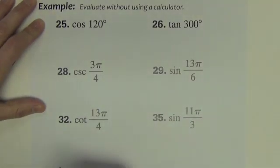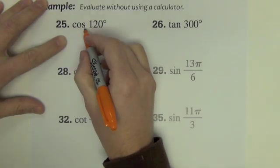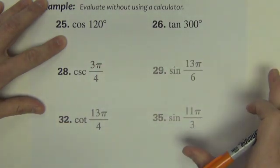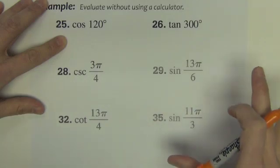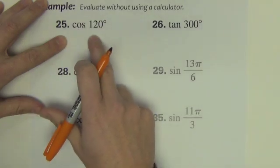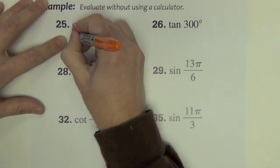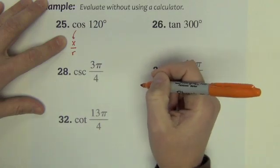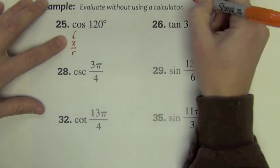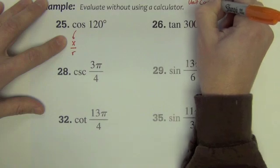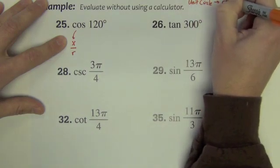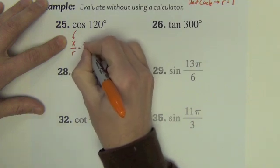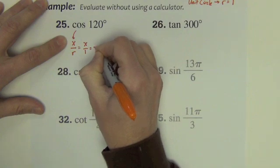Directions say evaluate without using a calculator. Cosine of 120. Have the unit circle out. What we just did a couple slides ago. Have those notes sitting in front of you. Cosine of 120 degrees. We just said on the last slide that cosine is defined to be the x over the r. Let's recall here that this is a unit circle. Therefore, the r is equal to 1. So if it's x over r and r is 1, then it's really x over 1, so it's just x.